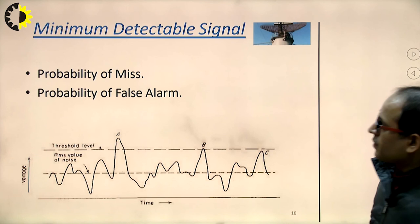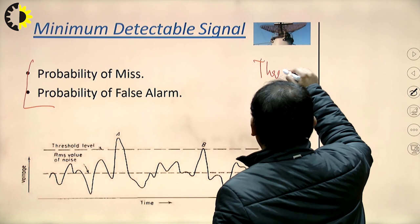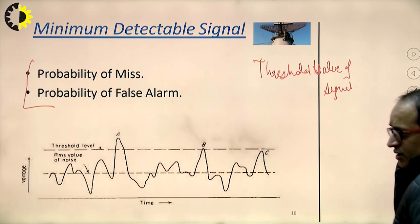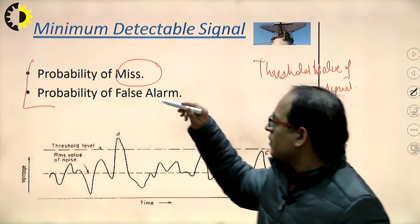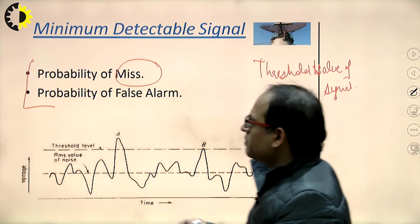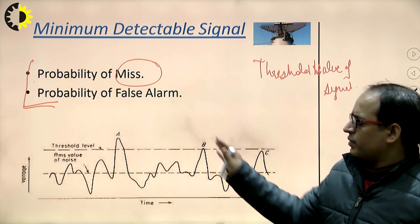The minimum detectable signal is the threshold value of the signal so that we cannot miss any alarm, cannot miss any object in space, and cannot falsely detect an unwanted target as a real target. There is a probability of miss and a probability of false alarm. In the next lecture, we will discuss what is the probability of miss alarm and the probability of false alarm.